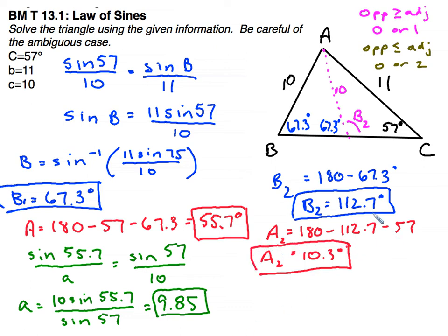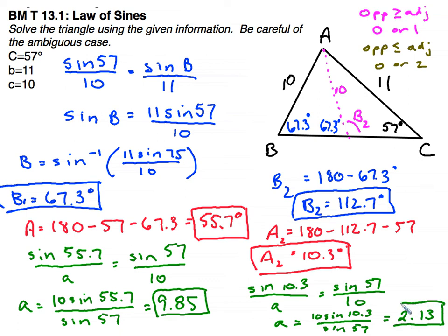And finally, to find side A2, that's the short one here. I'll set up the law of sines again. Sine of 10.3 over A is going to equal sine of 57 over 10. And when I cross multiply and divide, I get A is going to equal 10 sine of 10.3 divided by sine of 57, which is equal to 2.13.